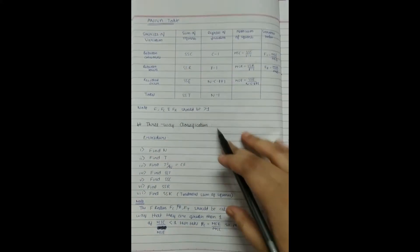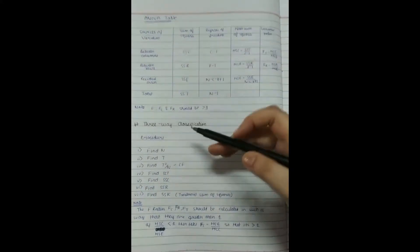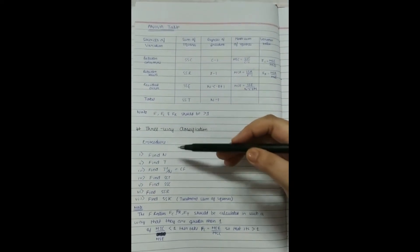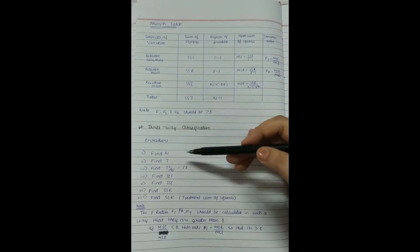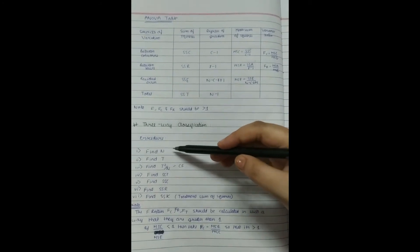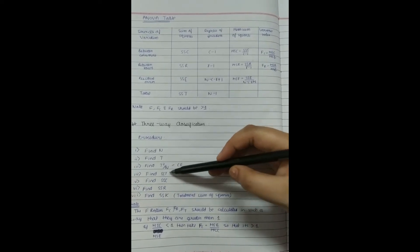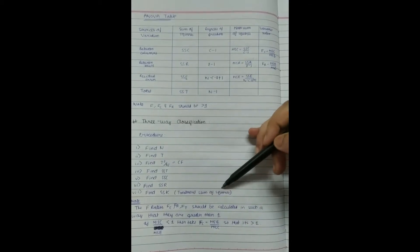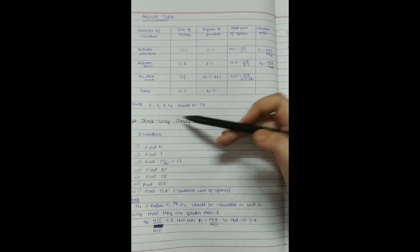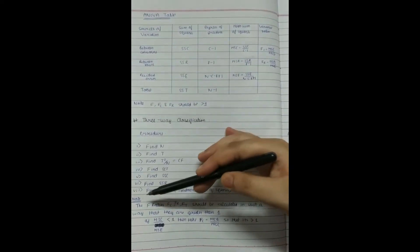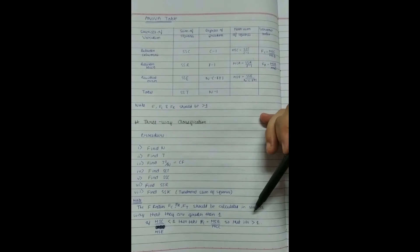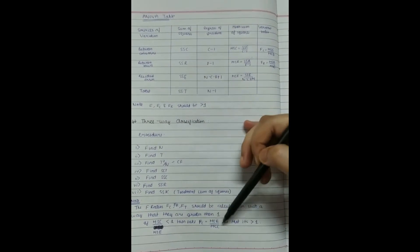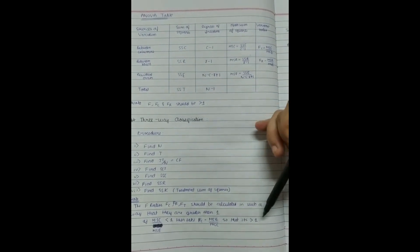Moving on to the three-way classification of ANOVA: the procedure is the same as two-way, but we additionally include treatments. We calculate n, T, T²/n, SST, SSC, SSR, and the treatment sum of squares (SSK), which is included specifically in the three-way classification. The F ratio should always be calculated such that it is greater than 1. If it is not, we take the inverse so that it becomes greater than 1.